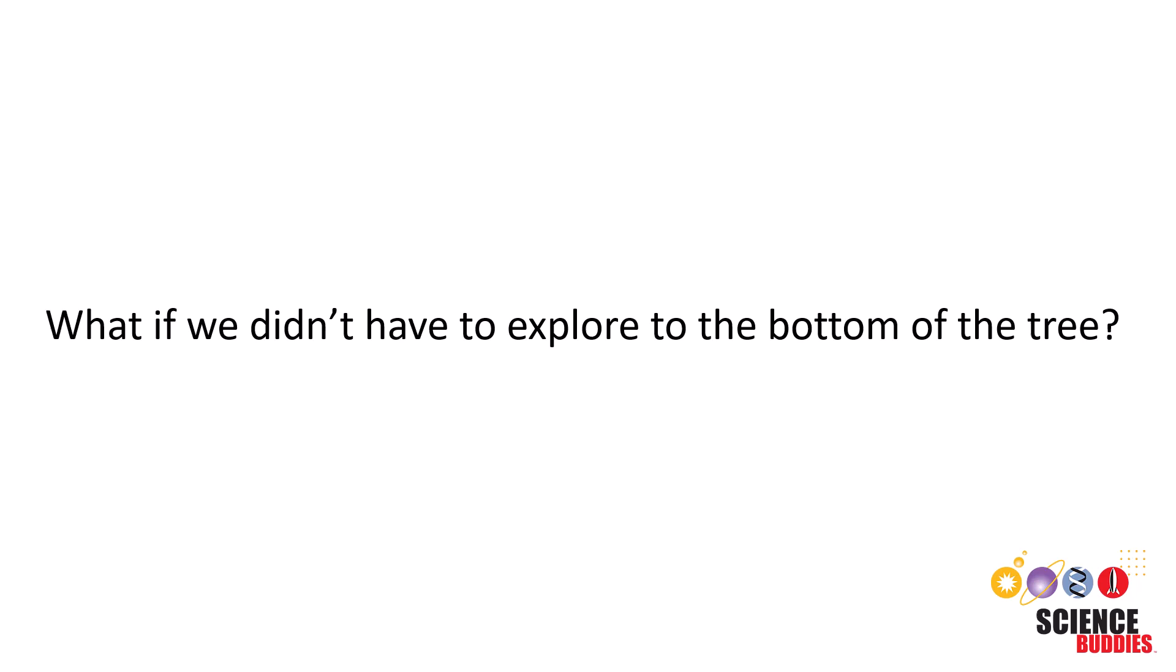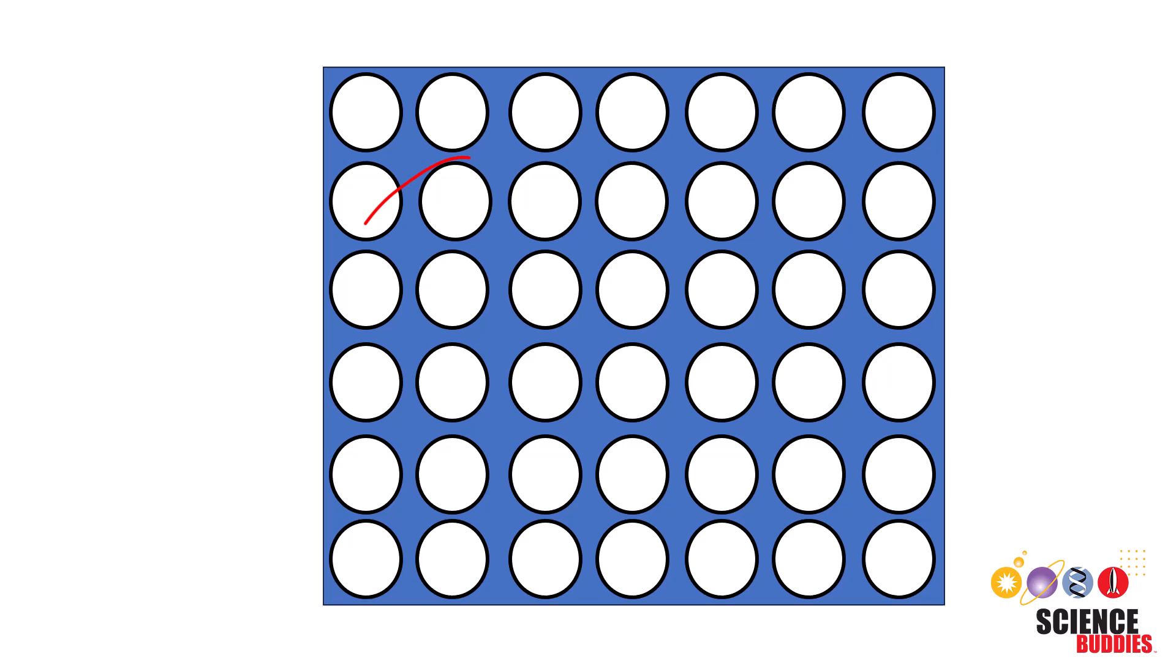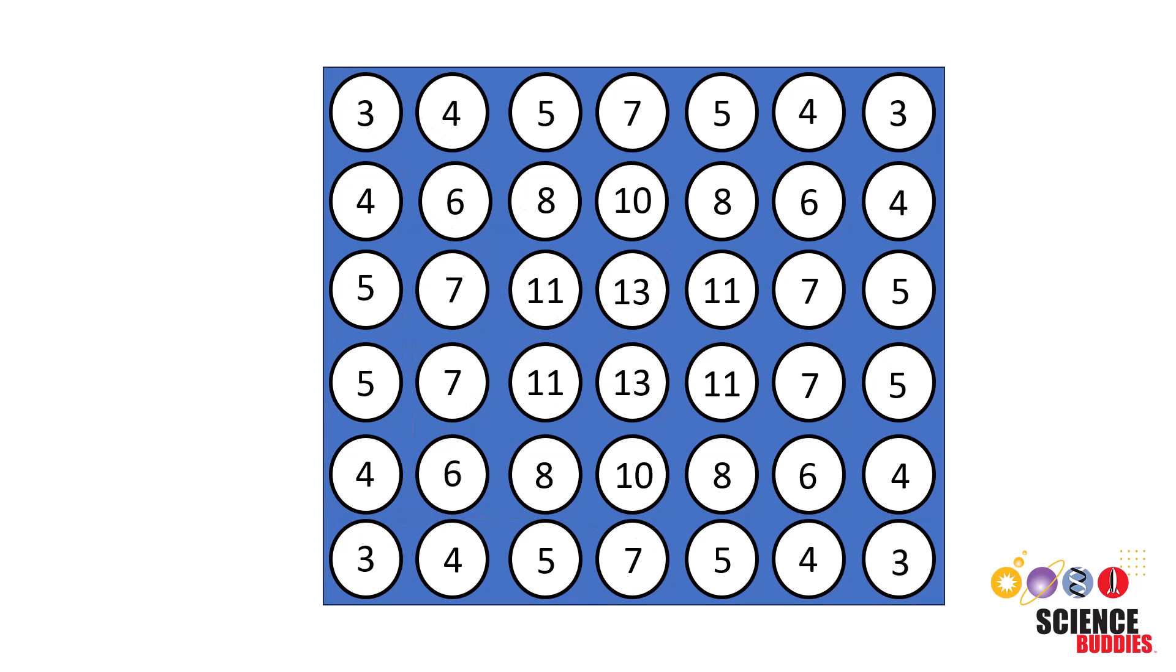But what if we didn't have to explore to the bottom of the tree? When beginning a Connect 4 game, the focus isn't necessarily on predicting the game's end from the start. Instead, we might consider the general area where we'd like most of our pieces to be placed. For instance, we might prioritize positions in the middle of the board, as it offers more winning combinations, as compared to edge positions with fewer possibilities. So what if we assigned a weight to each position? Then the algorithm would be more likely to pick positions on the board with higher weights, and less likely to pick positions with lower weights.